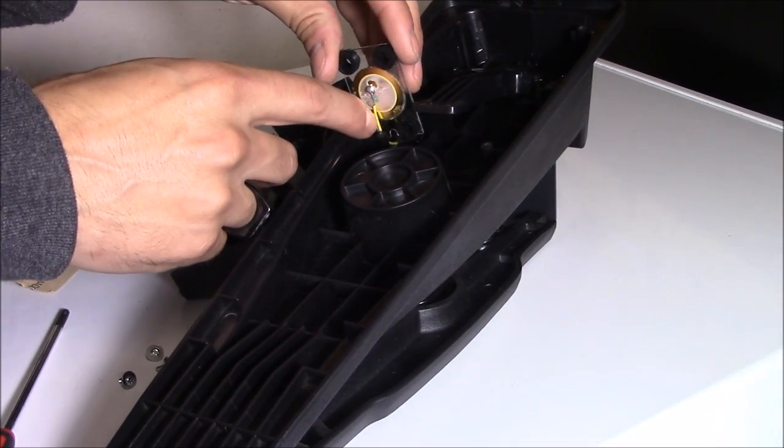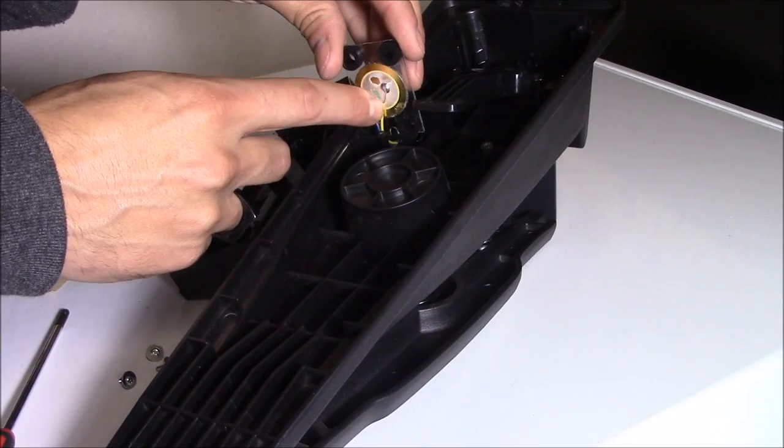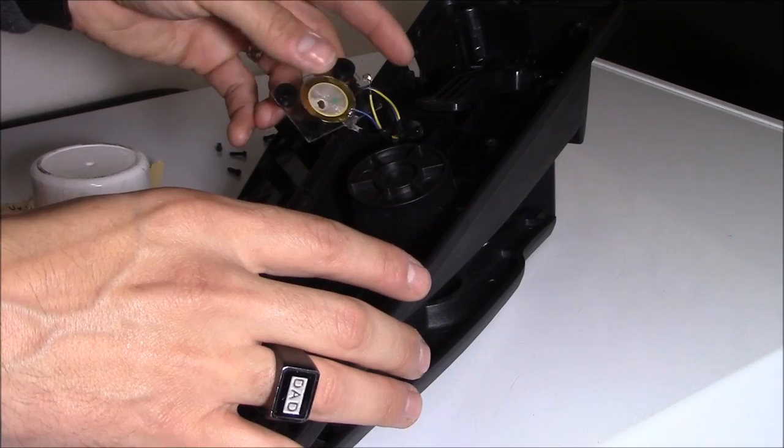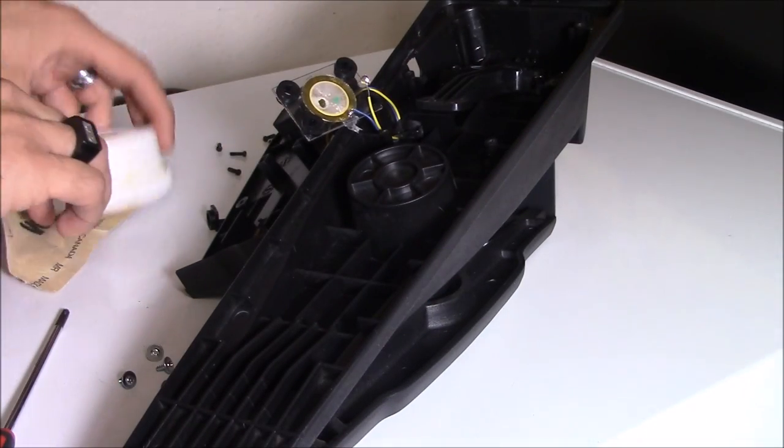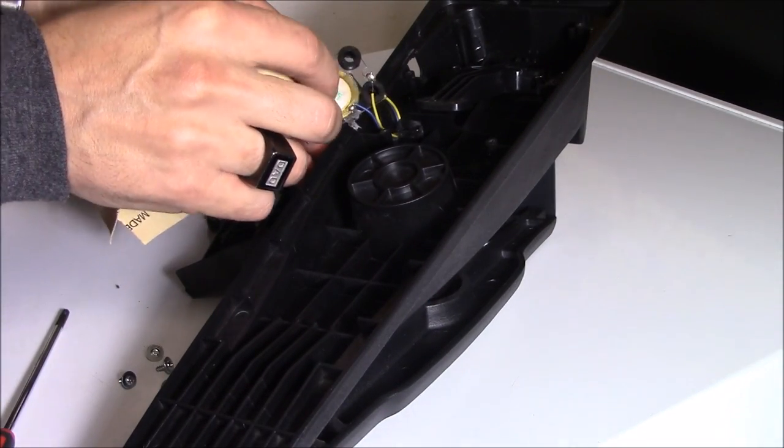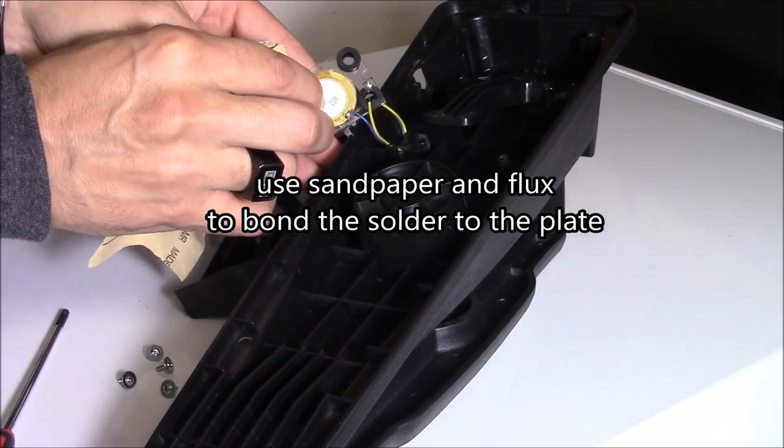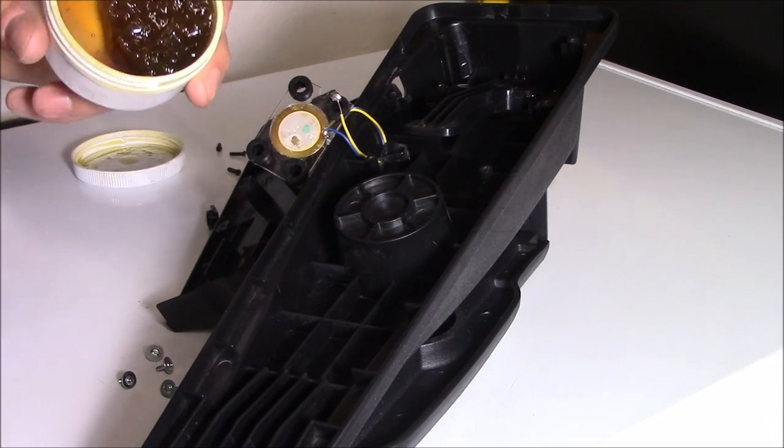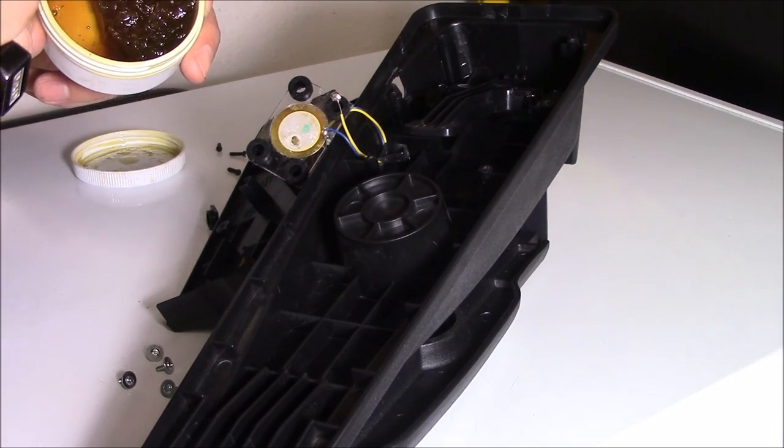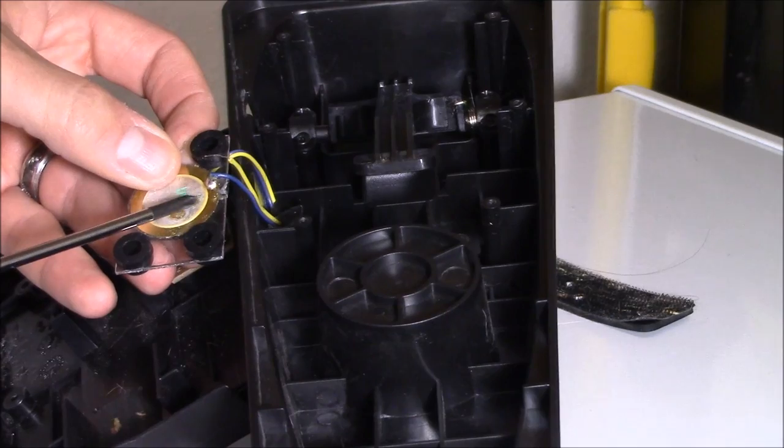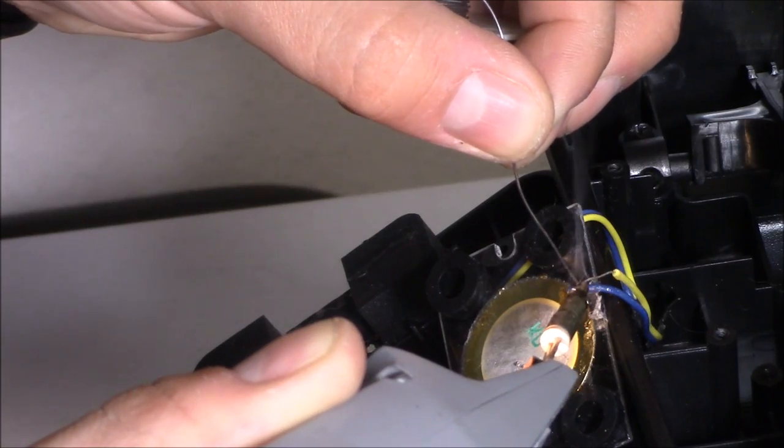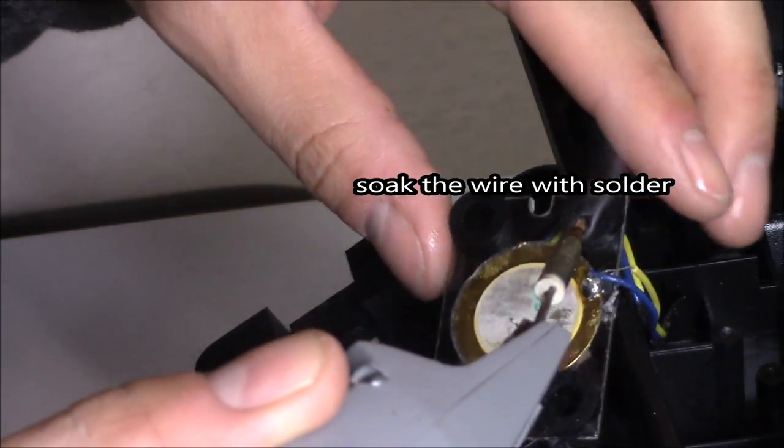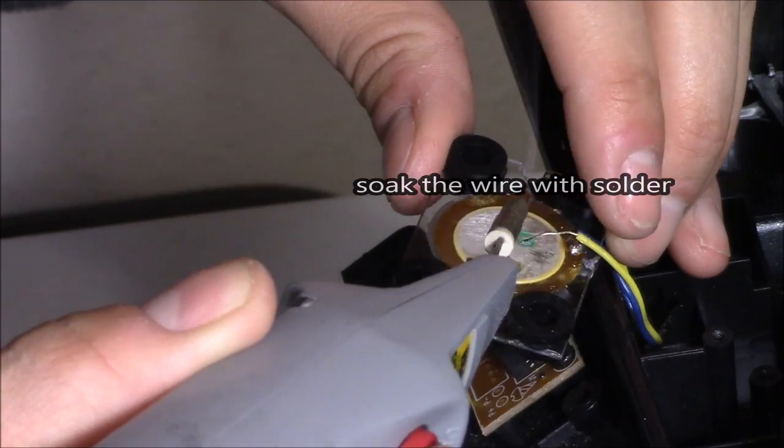Yep it's a bad connection and let's go ahead and fix that. It's an easy fix. You get some flux and this is gonna help bond the solder on the connection. All right so I'm gonna use some flux, wipe it on the surface, soak the wire with some solder. Let's go ahead and do so and make sure you have enough on there so it'll bond to the plate.